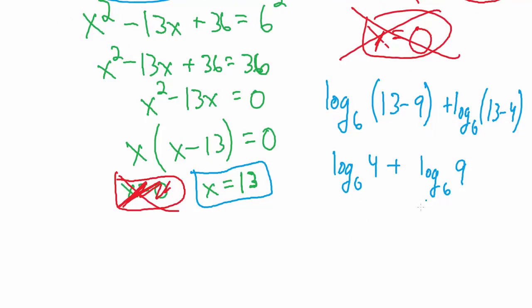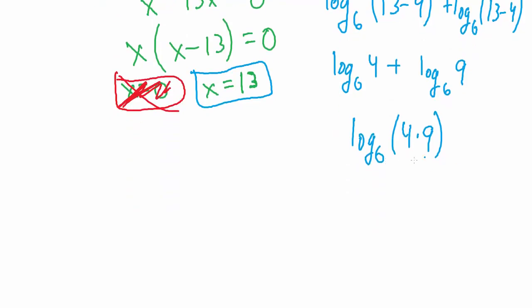Now what we can do is squish these guys together into one using the product rule for logs. So that's going to be the base 6 log of 4 times 9. And 4 times 9 remember is 36.